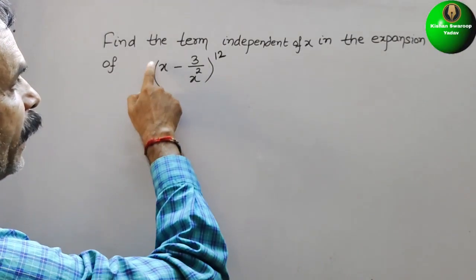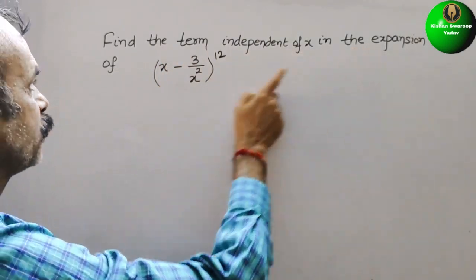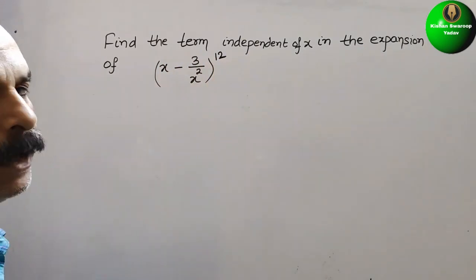Your question is find the term independent of x in the expansion of (x minus 3 by x square) and the power is 12.